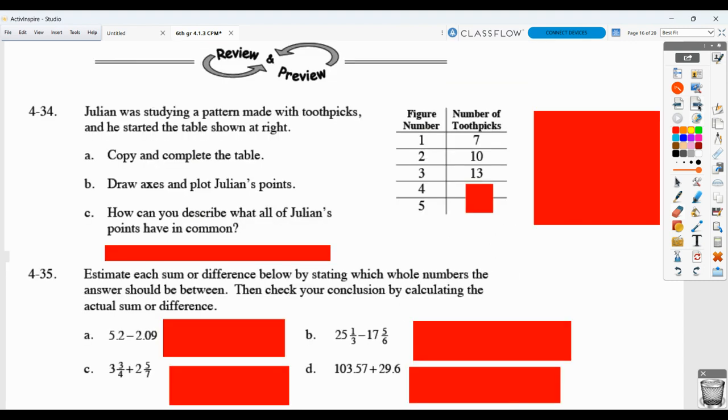Here Julian was studying a pattern made with toothpicks, and he started this table. So figure 1 has 7 toothpicks, figure 2 has 10, figure 3 has 13, we can see that the number of toothpicks is going up by 3. So figure 4 would have 16 toothpicks, figure 5 would have 19. Then they want us to draw axes and plot the points.